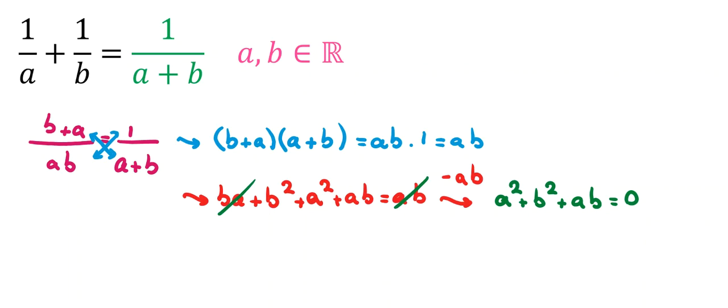For solving this part, I need to use a famous and basic identity. It is X plus Y squared equals X squared plus Y squared plus 2XY.